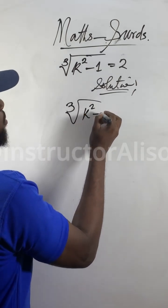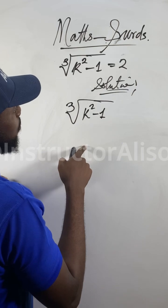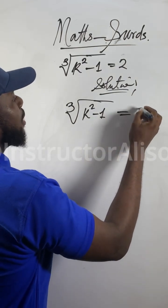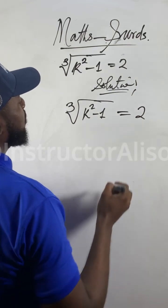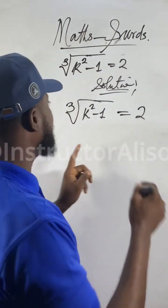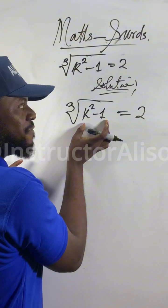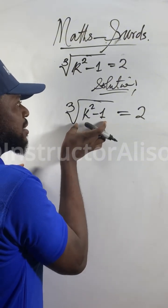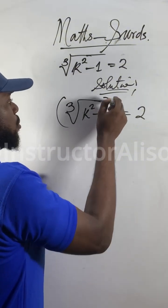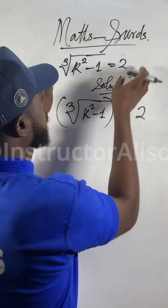...k squared minus one. Now k will not be zero. What you can do for this cube root — to make this side free — you won't just leave this. You carry the cube to this side, then we can see what the question gives us.